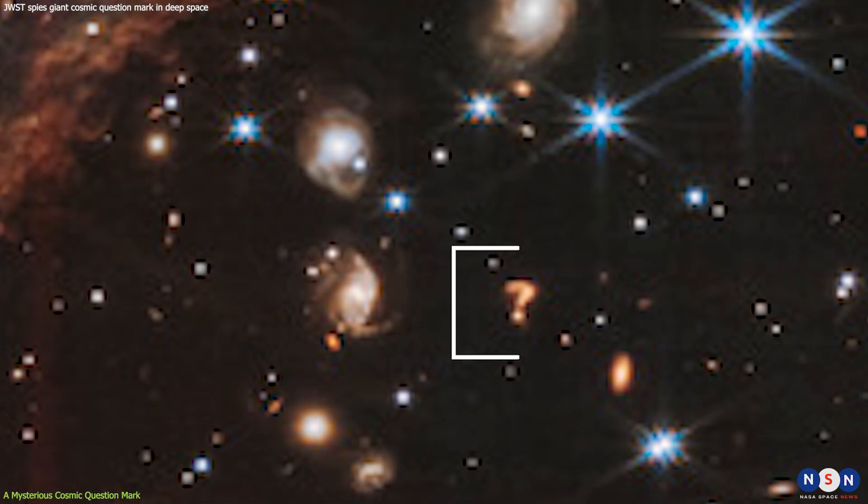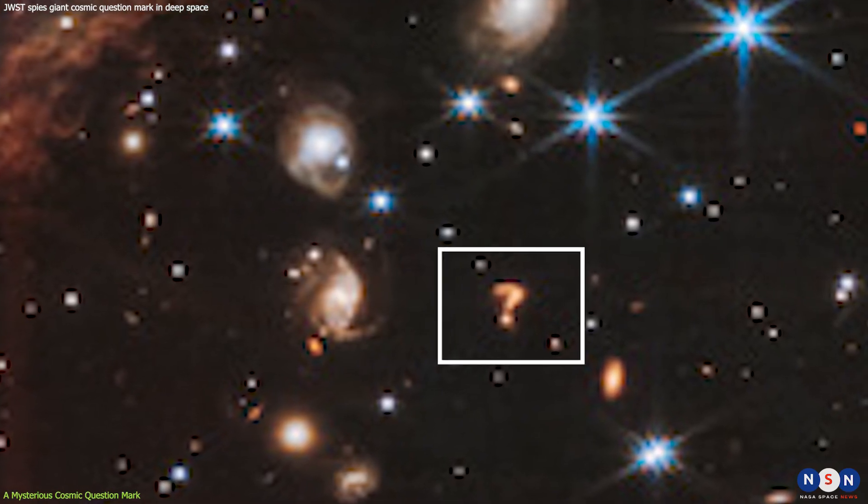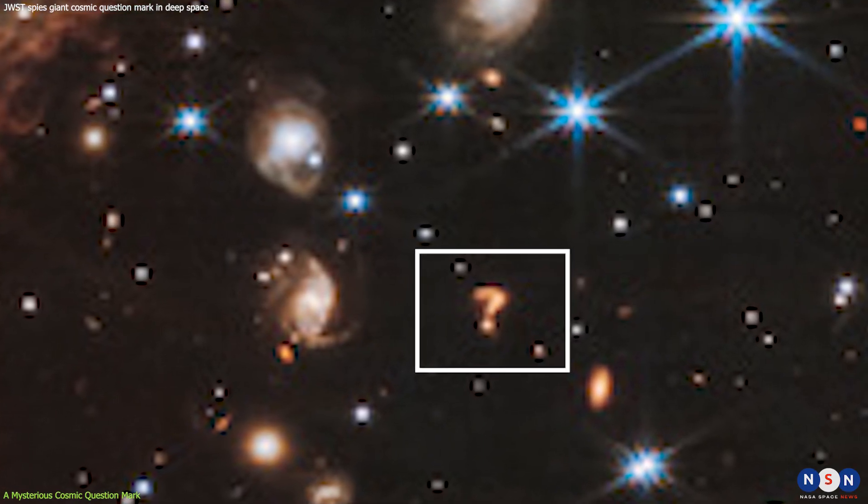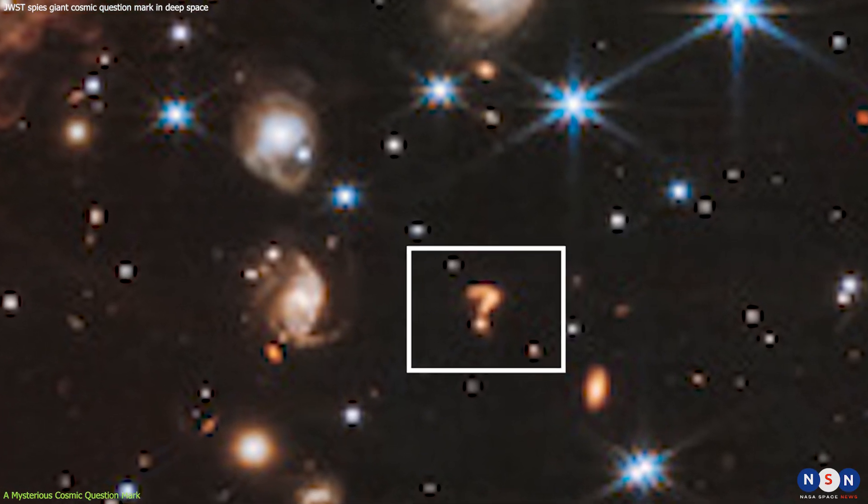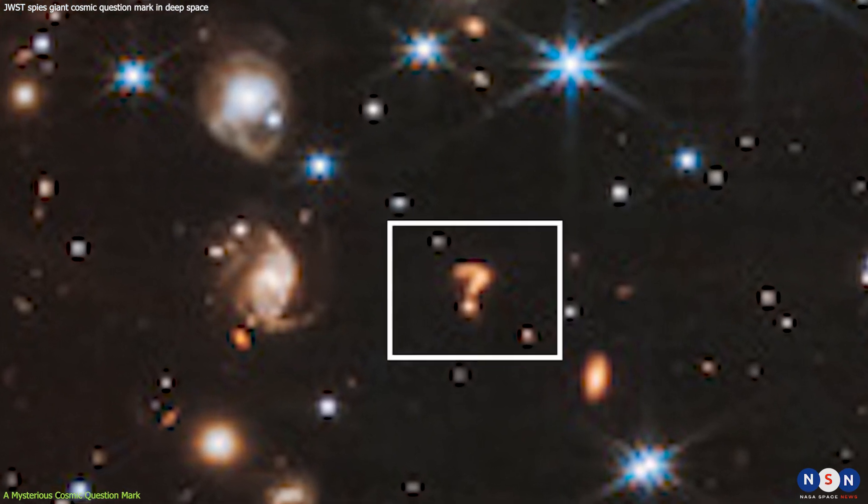But what caught the attention of astronomers was not the cluster itself, but a small galaxy near its center that looked like a question mark. The galaxy has a bright dot at its core, followed by a curved tail that extends for about 20,000 light-years. The tail seems to be made of stars that have been stripped away from the galaxy by the gravitational forces of the cluster.